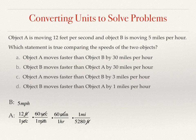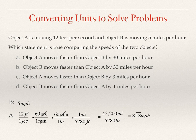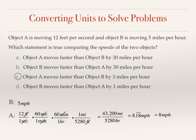Now I multiply across: the numerators give 43,200 and the denominators give 5,280. Dividing gives approximately 8.18 repeating, or about 8 miles per hour. So Object B is moving at 5 miles per hour and Object A is moving at approximately 8 miles per hour. Object A is moving faster than Object B by about 3 miles per hour.